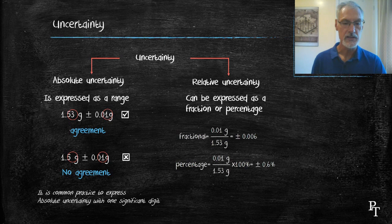Finally, it's common practice to express absolute uncertainty and relative uncertainty to one significant digit. So, hence, it's unlikely you'll see something that says plus or minus 0.013 grams. We would just round that off to 0.01 grams.